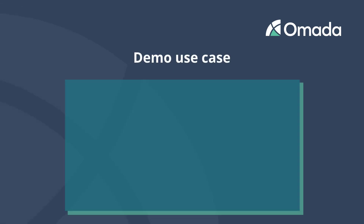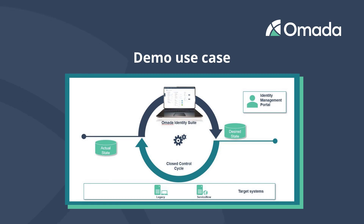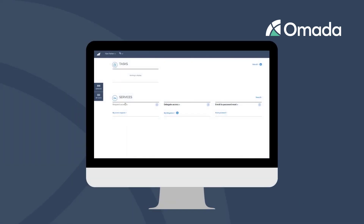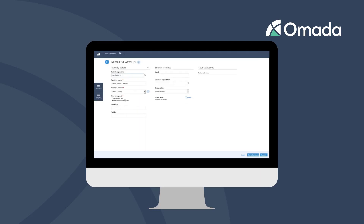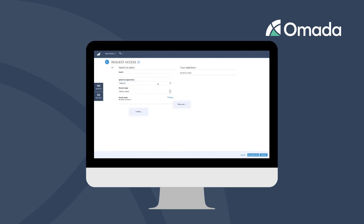For the demonstration of this feature, we can simplify the setup of OMADA Identity. There are only two connected systems. ServiceNow is our relay system, and Legacy is a system that has no technical provisioning integration with OMADA Identity. In our demo environment, we will now perform a request for a sample identity — in this case, Alan Parker — and we will request access for our legacy system, which has no direct connectivity interface with OMADA Identity.